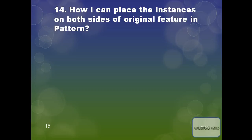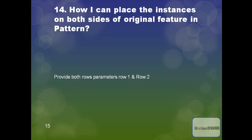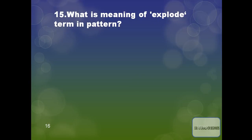How can I place instances on both sides of the original feature in a pattern? Just provide both row parameters — row one and row two — and you can then create instances on both sides of the original feature.